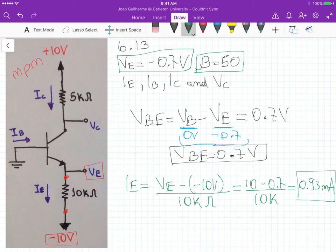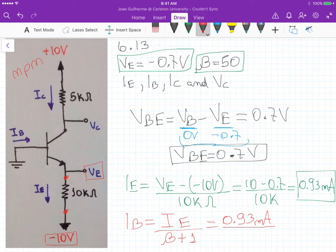So that's the first current that we have, IE. Now, because we know that the current IB is equals to IE divided by beta plus 1, we can actually calculate the base current, which is that 0.93 milliamp divided by beta plus 1, which is 51, that's equals to 18.23 microamps. That's our second current.